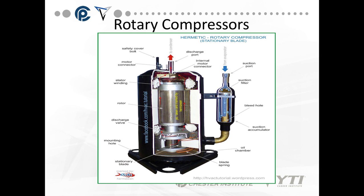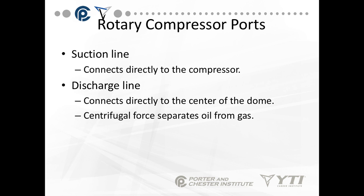The dome is on the discharge port — it is on the high side. The suction line comes in from the side at the bottom, and then the refrigerant is pushed through and out the top. The suction line connects directly to the compressor, and the discharge line connects directly to the center of the dome. The centrifugal force generated by the rotating rotor and blades separates the oil from the gas, so the majority of the oil actually stays in the compressor.